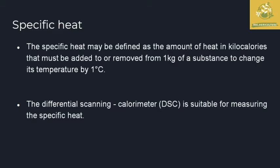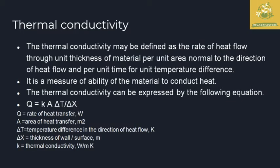First, we look at specific heat. Specific heat is nothing but the amount of heat added or removed from 1 kg of a substance to change its temperature by 1 degree centigrade of the particular food material. It is measured using a DSC — Differential Scanning Calorimeter — which is used to measure the specific heat of the particular product.